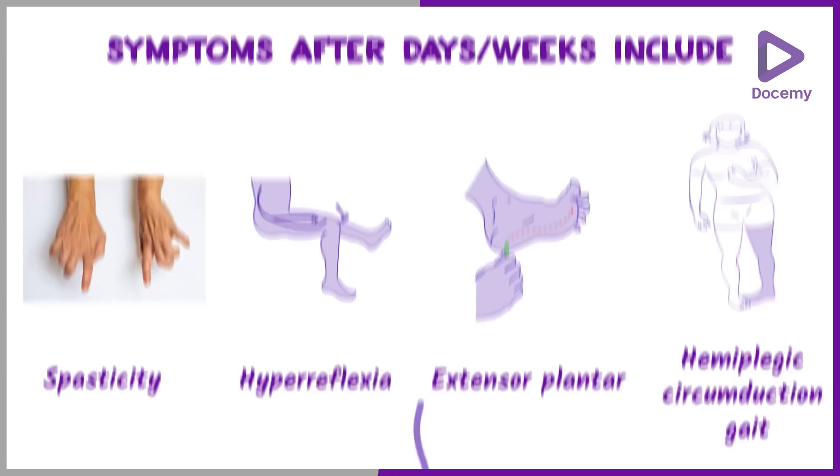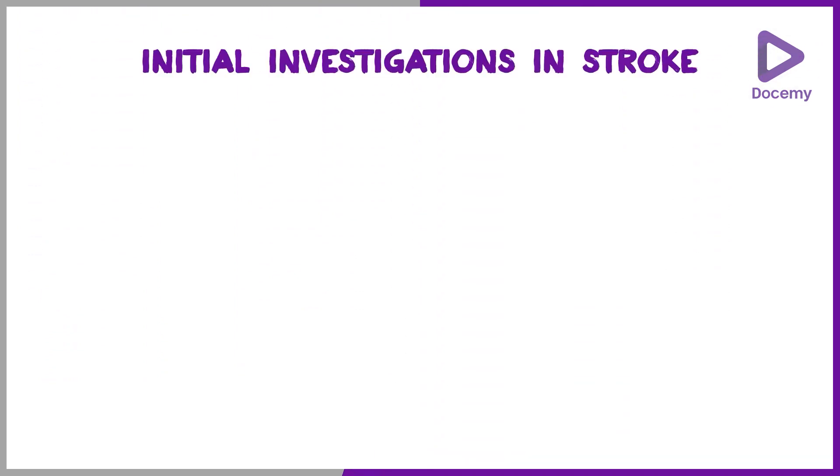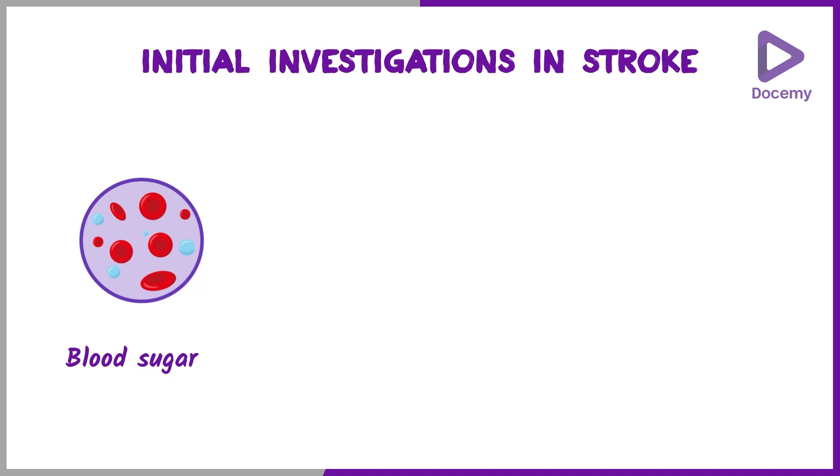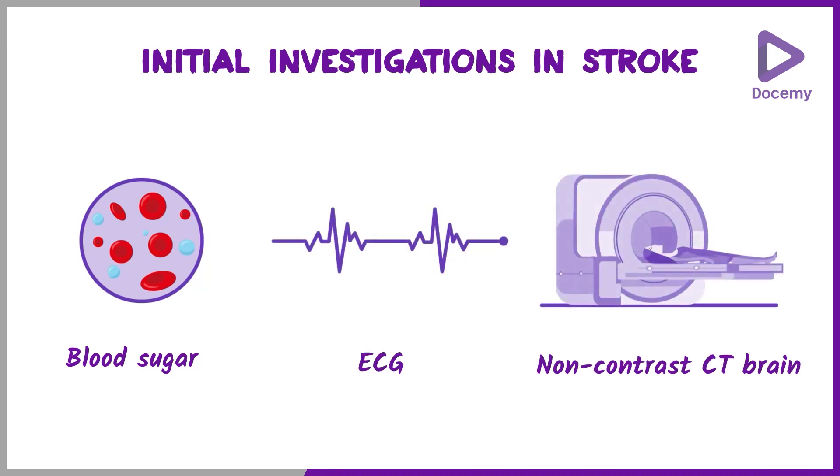The most important initial investigations in stroke are a blood sugar, ECG, and a CT brain.